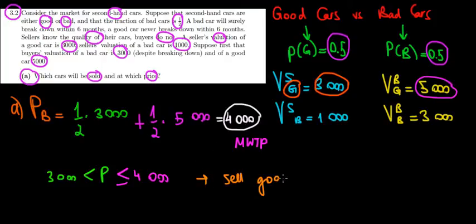Now the question is, can we also sell the bad cars? Well yes, because the seller values the bad cars at only 1,000 euros. If he values them at 1,000 euros, meaning he would be willing to sell them for 1,000 euros, but he's going to get more than 3,000 euros, then he definitely can sell bad cars as well.